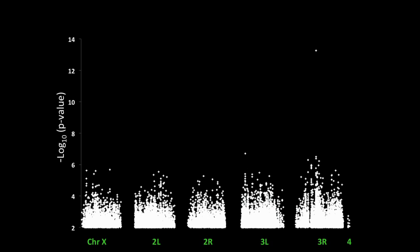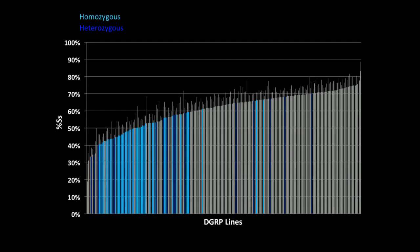So we ran a GWAS with that phenotype data and the full genome sequences of each line. And this is our data. Anything above this red line is considered highly significant, which leaves us with this SNP up here. It's the only highly significant SNP from this analysis, and it's within spineless.